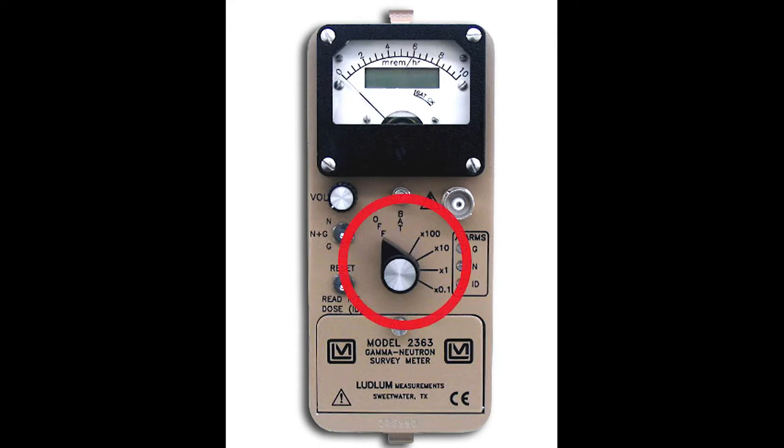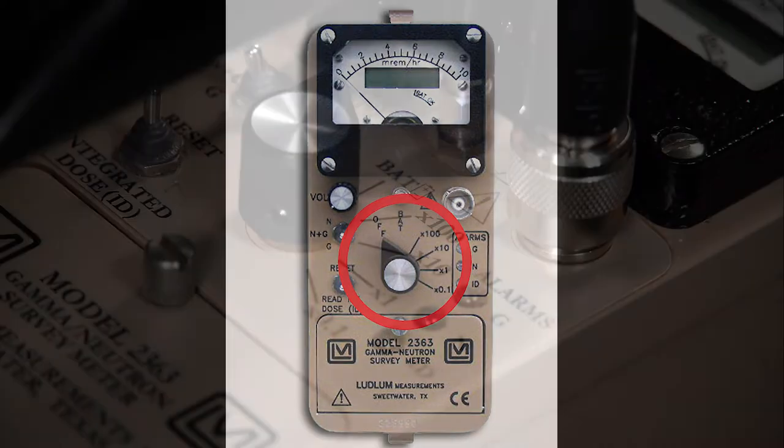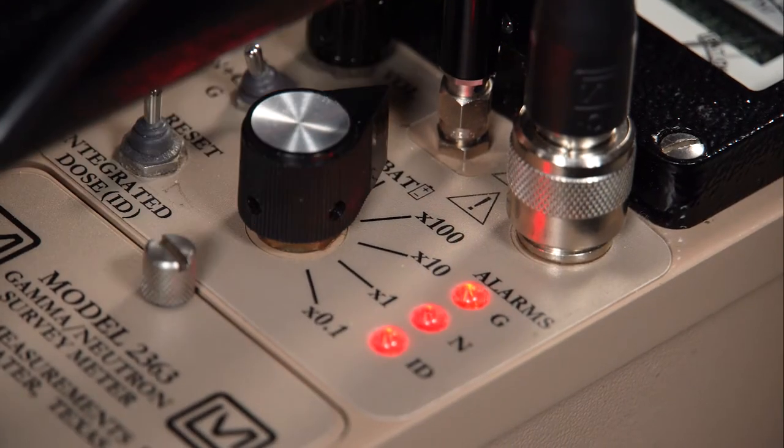The operator controls for the Model 2363 consist of a six-position rotary switch to select the analog meter range multipliers and check the battery status. When the switch is rotated to the bat position, the meter pointer should deflect above the left vertical mark.